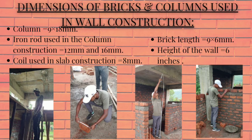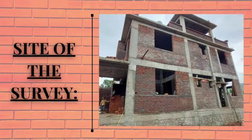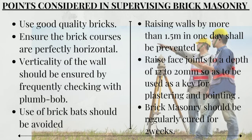In the columns, iron rods of 12 mm and 16 mm are used. For slab construction, the coils used are 8 mm in size. We conclude from the survey that a building of up to five floors can be constructed on that site.